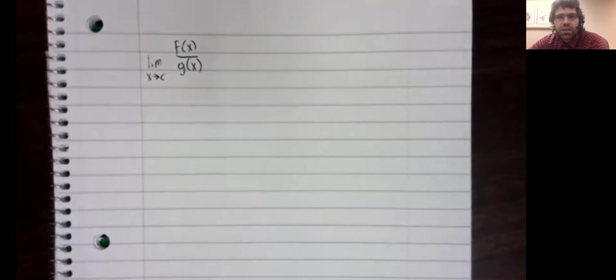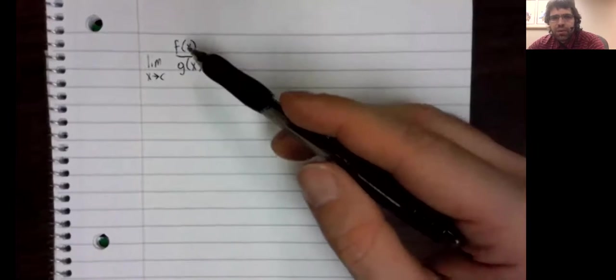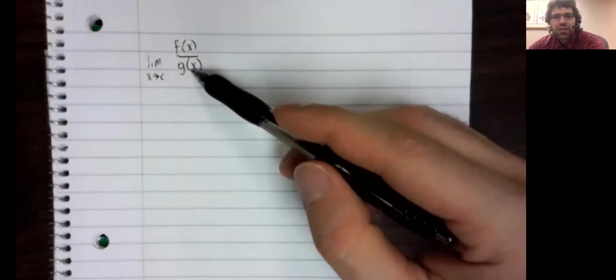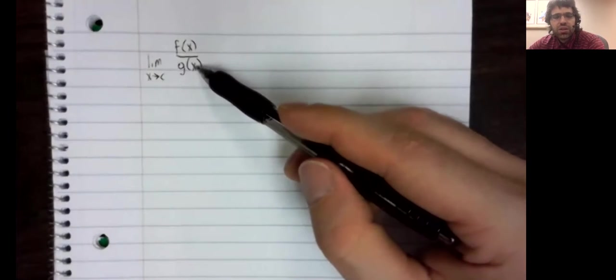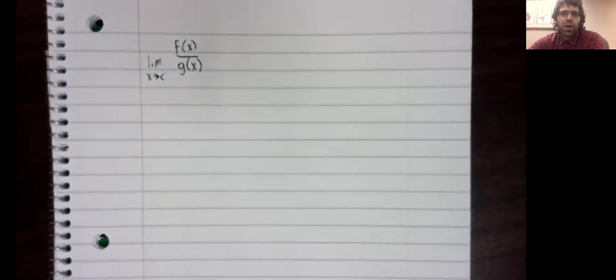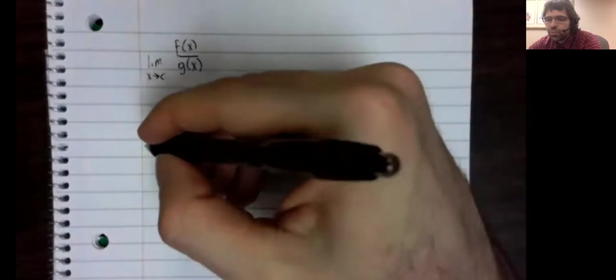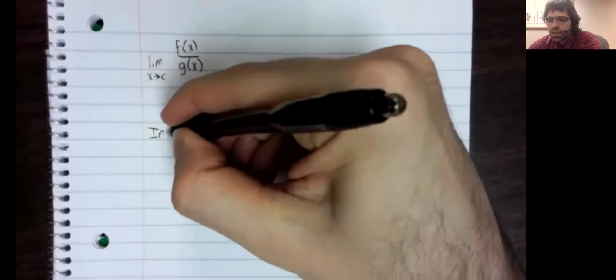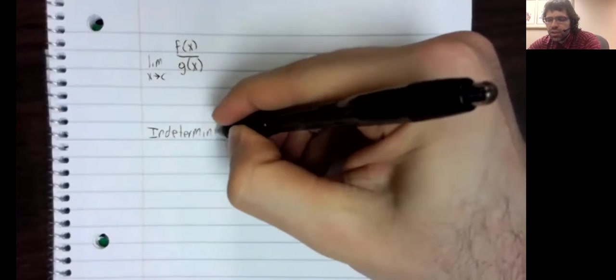Very frequently, we can just take such a limit without any bother. For example, if f of x and g of x are continuous, and plugging c into g doesn't give you a division by zero error, you can just let x equal c and compute the limit that way. However, that's not always so easy.